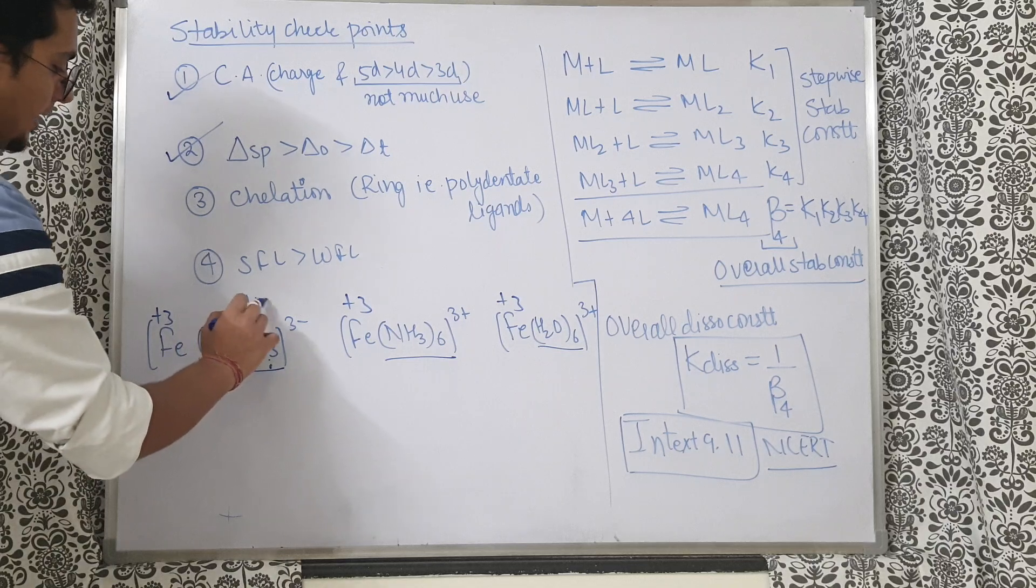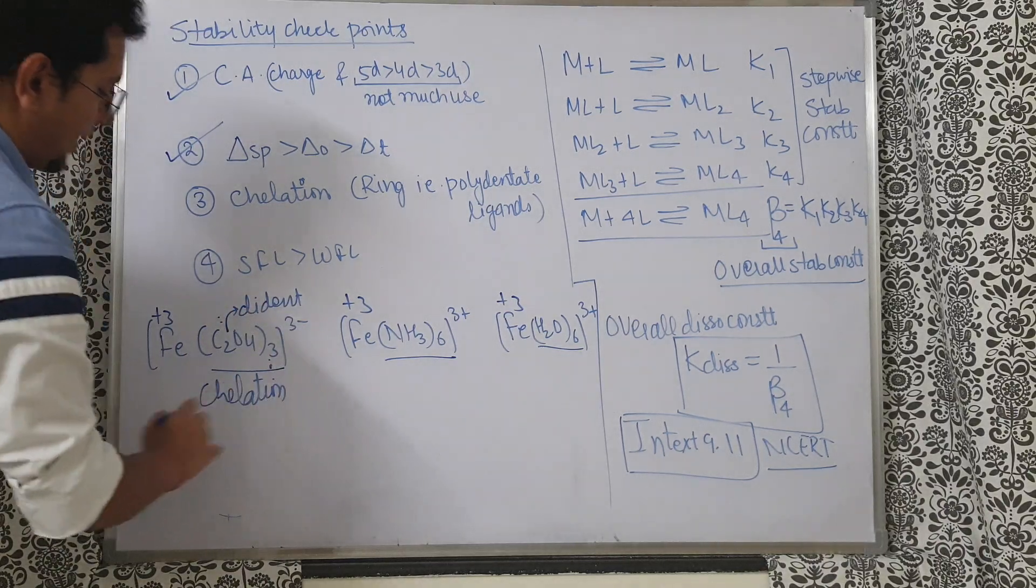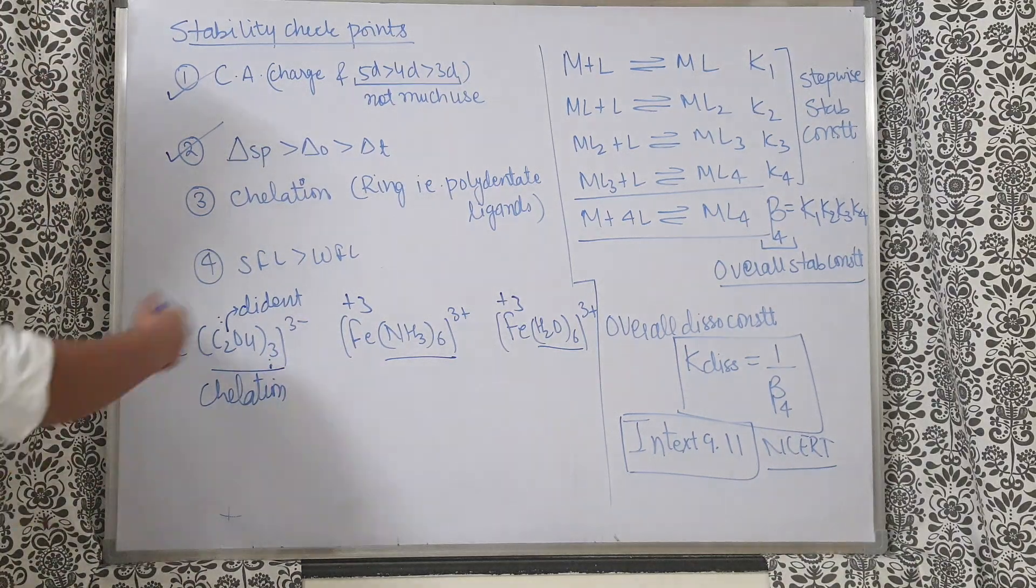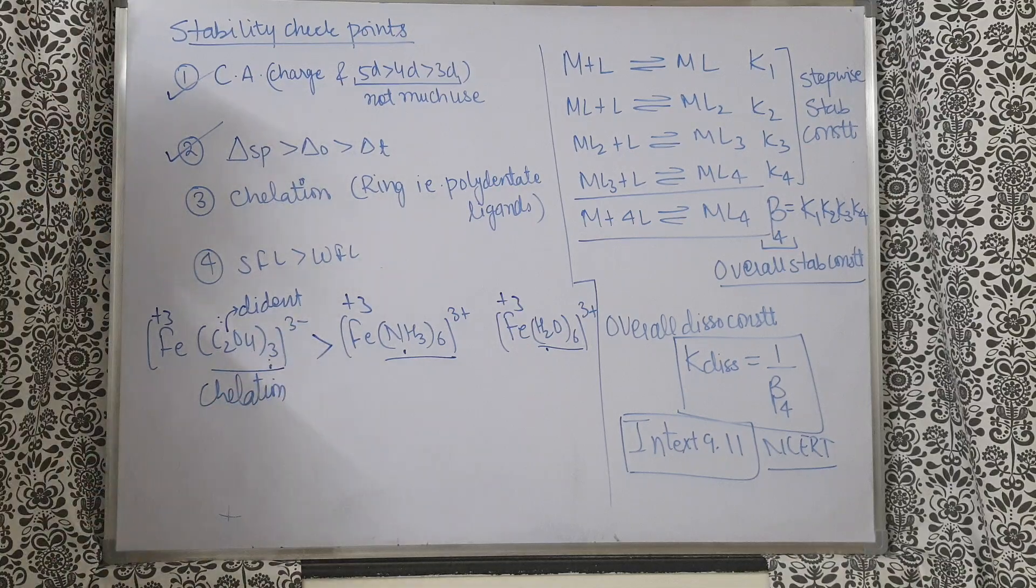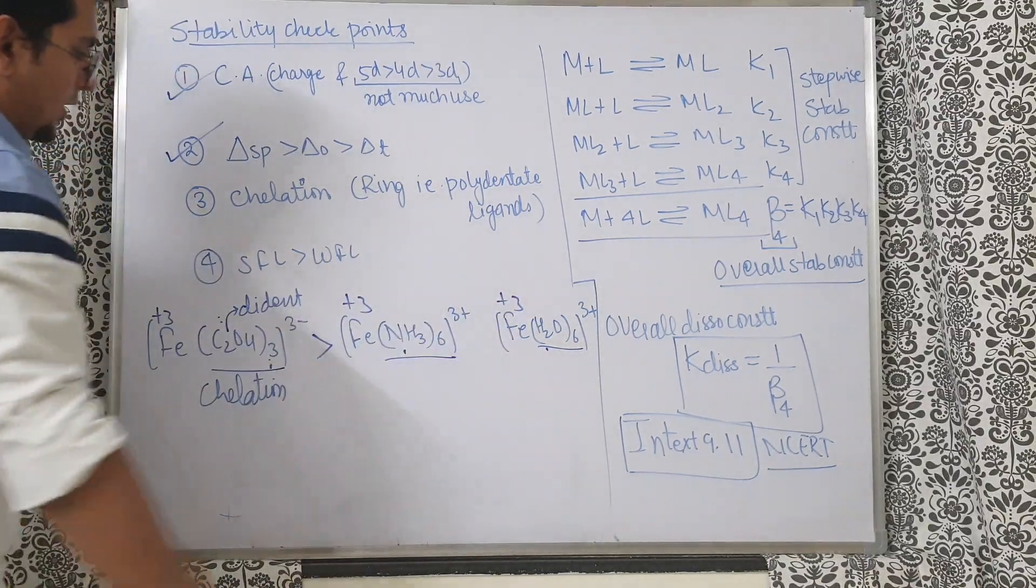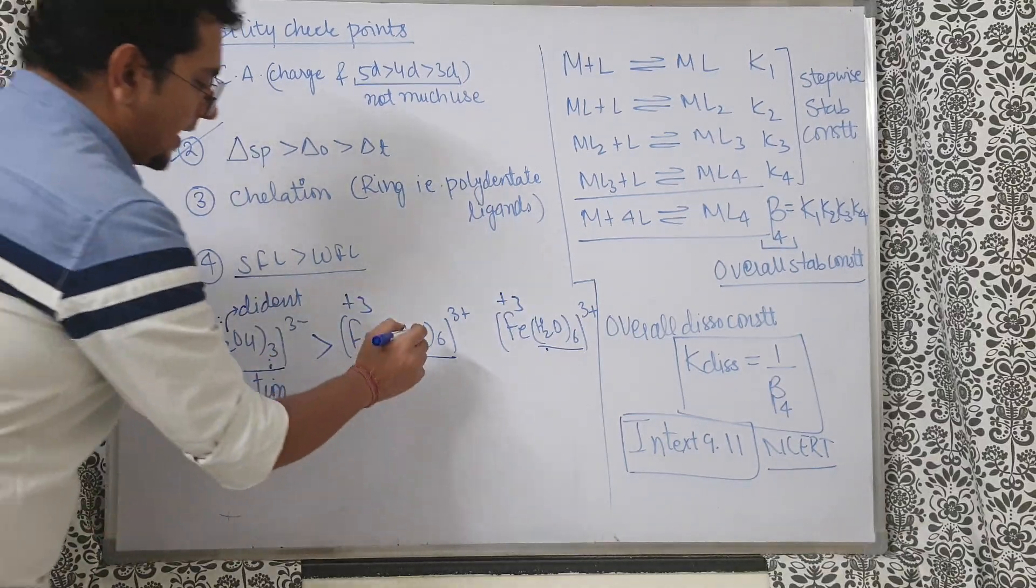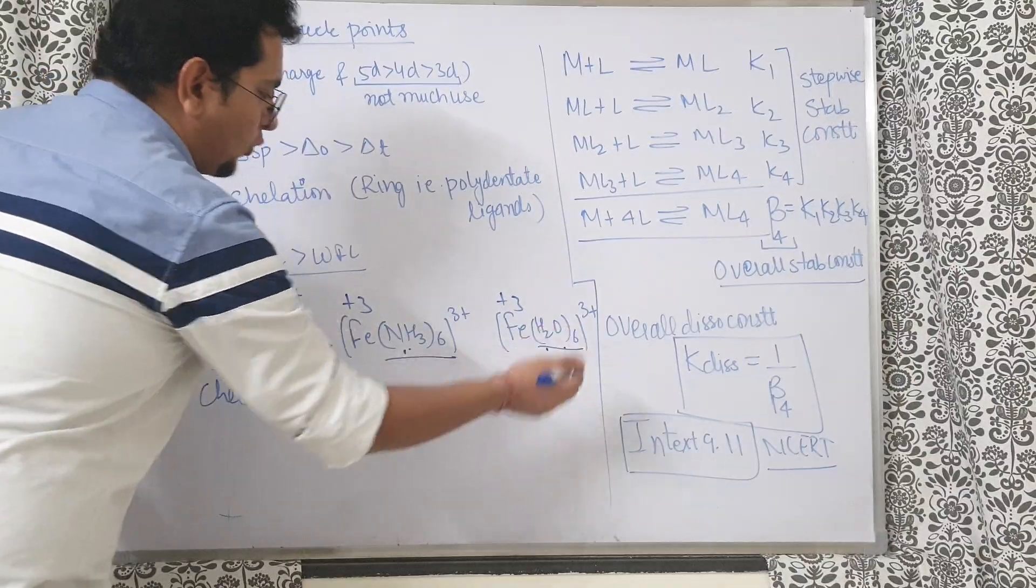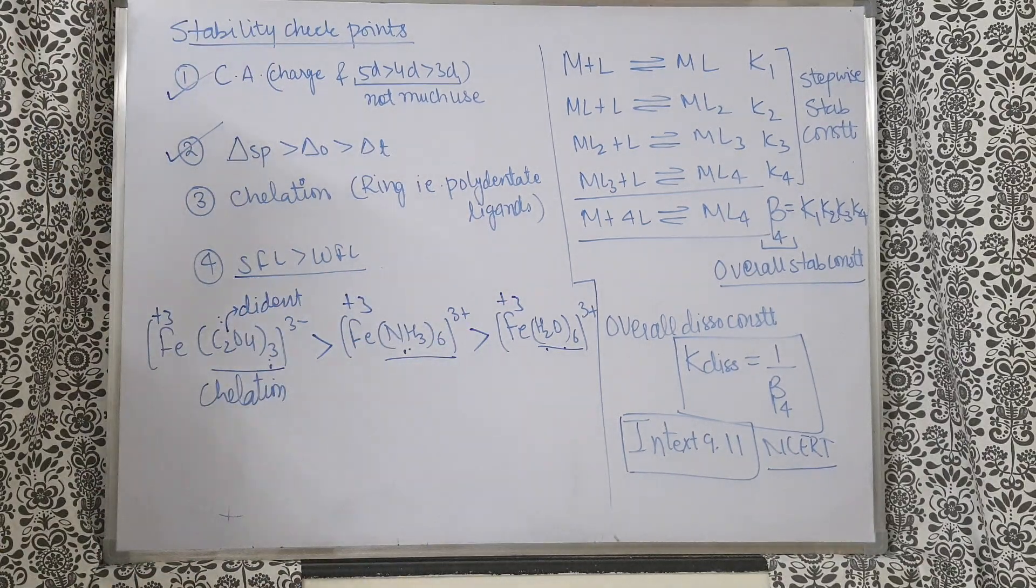Now check chelation. So here we understand it's a bidentate ligand, so it can show chelation and due to chelation it will become rank one. No need to check further. These are monodentate ligands, so chelation rank one is this. Now I am comparing second and third. Both of them have no chelation, so check SFL/WFL. NH3 is a stronger ligand than water, so that's why this is the stability order we get. Very important question, direct question.